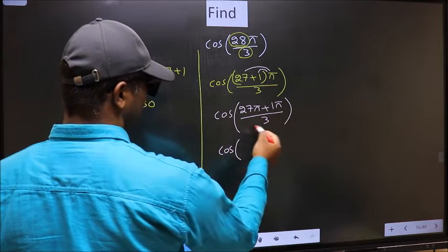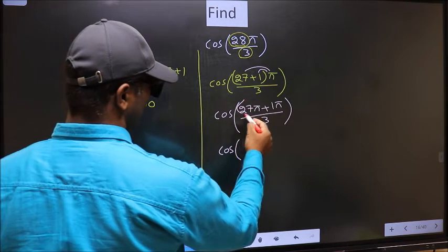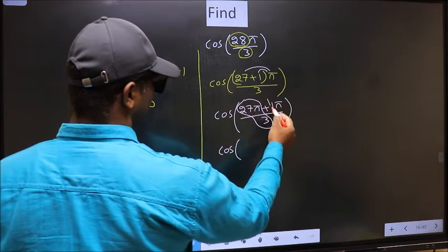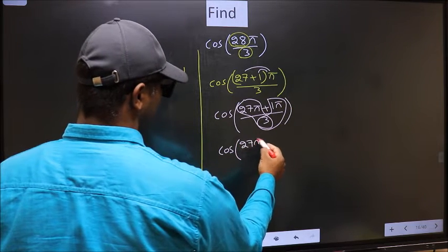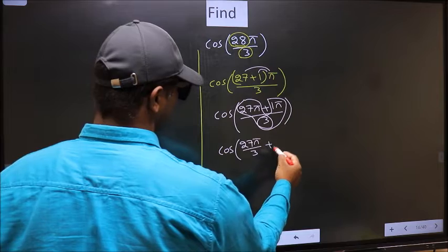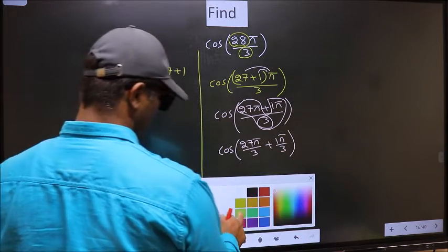For cos over here, you should split the denominator in this way: that is 27π/3 + π/3.